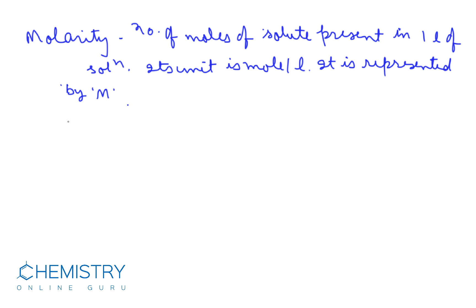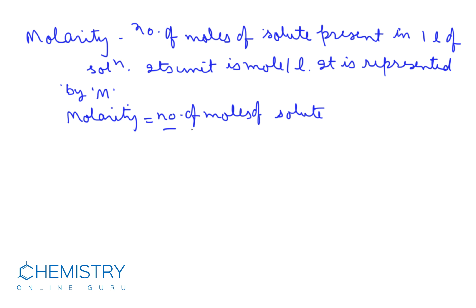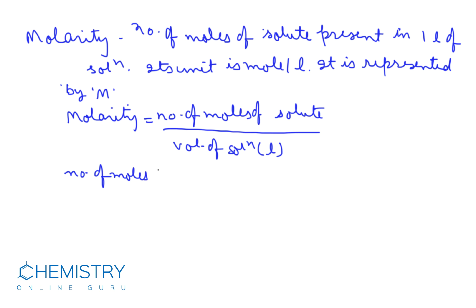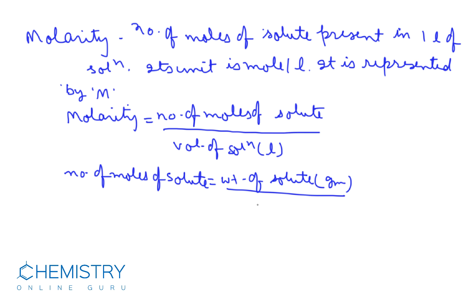The formula of molarity is: number of moles of solute divided by volume of solution in litres. Number of moles of solute equals weight of solute in grams divided by molecular weight of solute. As a whole, the formula of molarity is: molarity M = W upon mV.